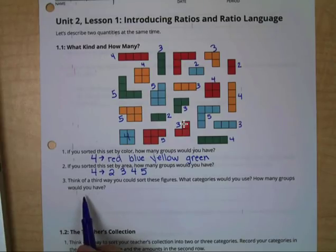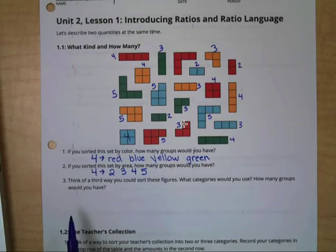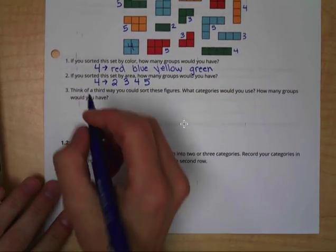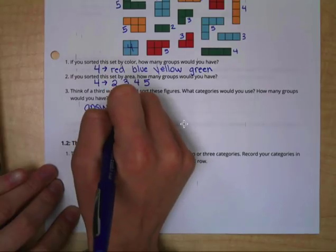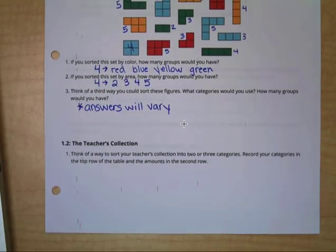For the last question, think of a different way that you could sort all of these figures. What would your categories be, and how many groups would you have? I'm going to let you do this on your own. So everybody might have a little bit of a different answer, but that's okay. All right, answers will vary. Think about if you were to sort them according to the shape. So could you do squares and non-squares, or straight lines and not straight lines? That might give you a starting point. Remember, there's no right or wrong answer. There's a whole bunch of different ways that you can categorize them.